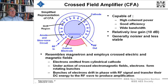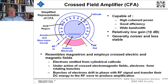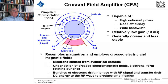Next I'm going to talk about cross-field amplifiers. This is a simplified representation I put together with Adobe Illustrator, based on a figure in Merrill Skolnik's book. It resembles a magnetron, which I'll talk about in the next section. It's capable of high coherent power within a pulse and good efficiency and wide bandwidth, but it has relatively low gain — although some advanced versions called high-gain CFAs now achieve 20 to 30 dB of gain. They are generally noisier and less stable than some of the other systems.